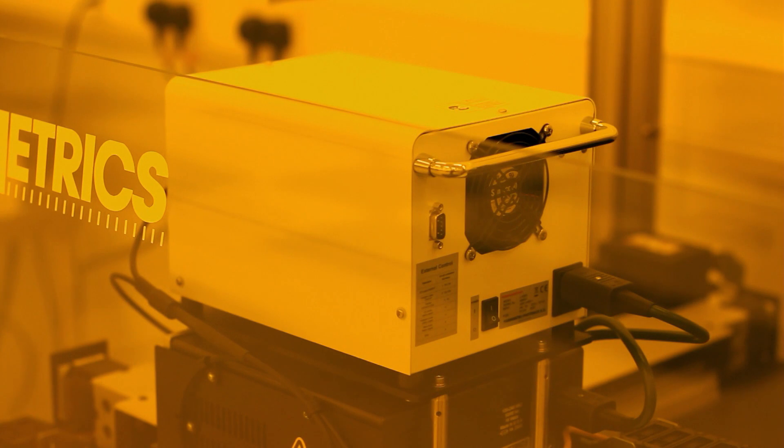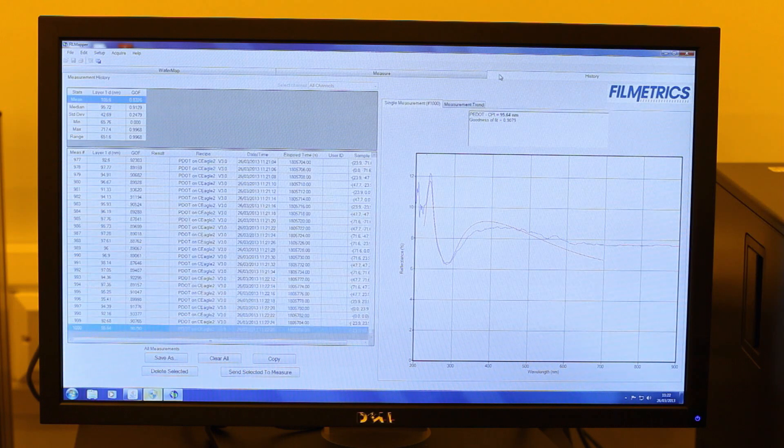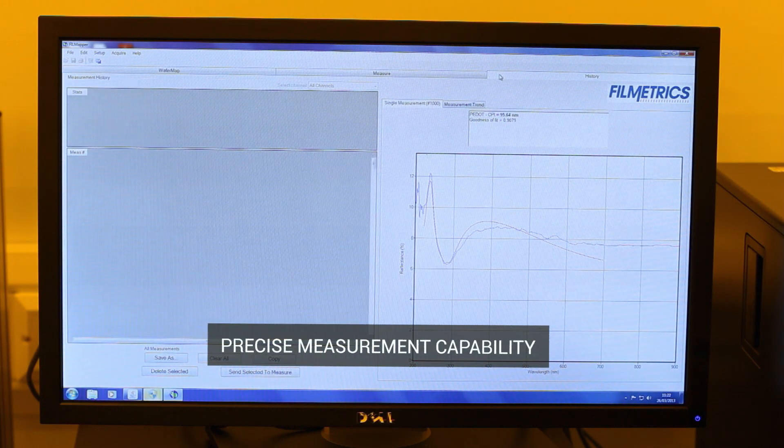Automated thin film metrology is utilised to measure precise film thickness and uniformity, enabling the user to quickly characterise and optimise the coating process.